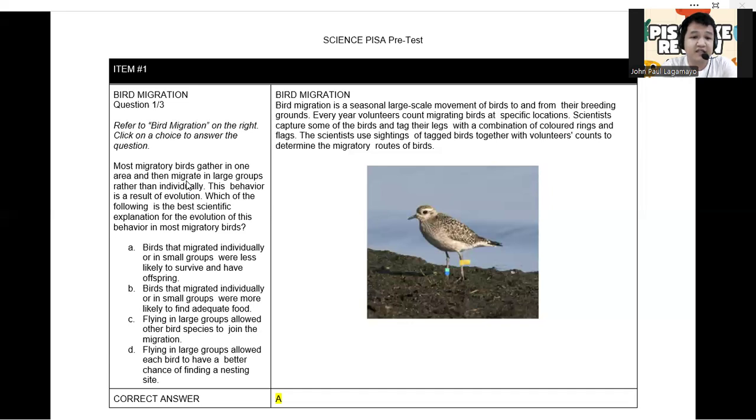It's because larger groups of birds have more advantage of finding food rather than a smaller group of bird species. So this is definitely incorrect, letter B. Take a look at letter C. Flying in large groups allowed other bird species to join the migration. While it is possible that in a large group some bird species may join, however, this is not a direct evolutionary advantage for primary migratory birds.